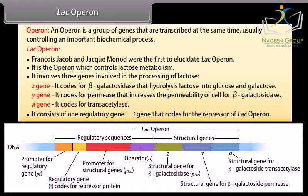It consists of one regulatory gene, the I gene, which codes for the repressor of the lac operon.